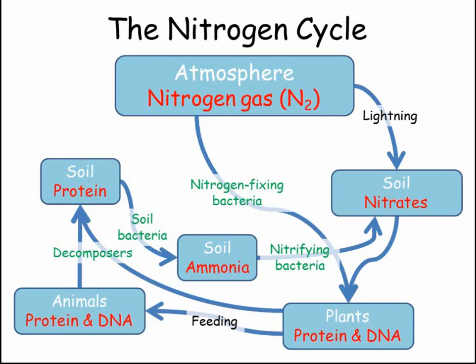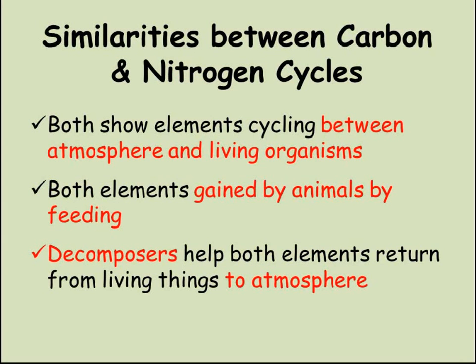The only thing left in the cycle that we've built up is a way for the nitrogen to be returned to the atmosphere. Denitrifying bacteria fill this role, converting nitrate in the soil into nitrogen gas. Both of these cycles show how an element can be cycled between living things and the atmosphere. All living things rely on carbon and nitrogen and have different strategies for getting these essential nutrients. Animals get both from the food they eat. Plants photosynthesise to absorb carbon and gain their nitrogen from either mutualistic bacteria in their roots or by absorbing nitrate from the soil.